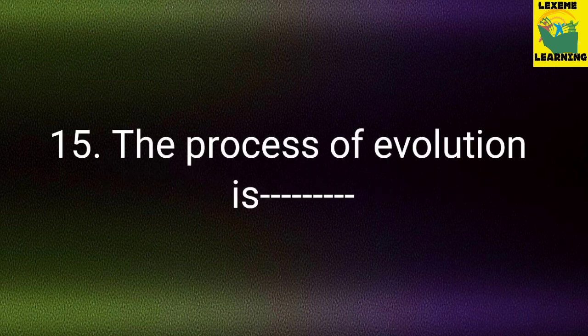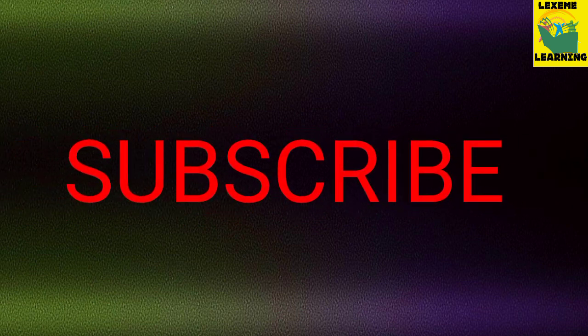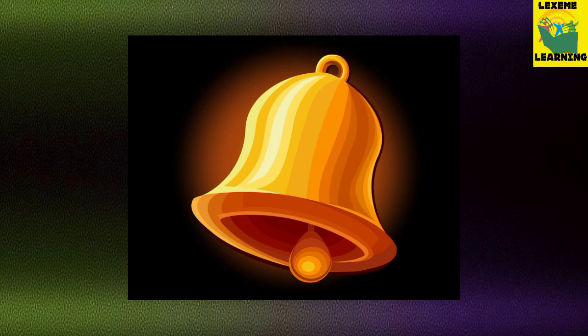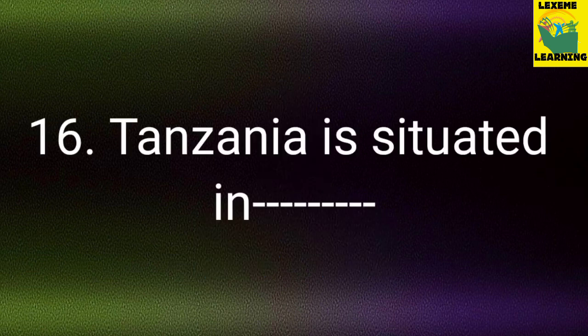Question number 15: The process of evolution is dash. Your answer: gradual. Yes, evolution takes place gradually. Question number 16: Tanzania is situated in dash. Your answer: Africa.